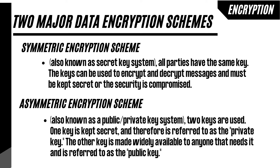Asymmetric key systems can solve this problem. In an asymmetric key system, also known as a public/private key system, two keys are used. One key is kept secret and is referred to as the private key. The other key is made widely available to anyone that needs it and is referred to as the public key. The private and public keys are mathematically related so that information encrypted with the public key can only be decrypted by the corresponding private key.